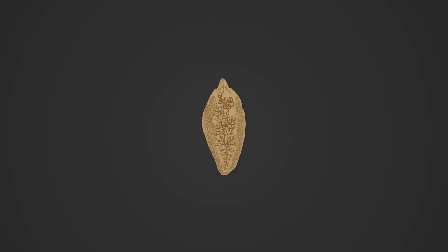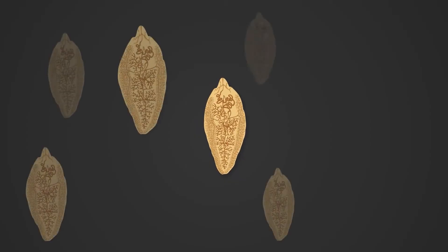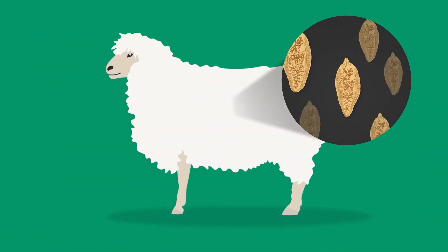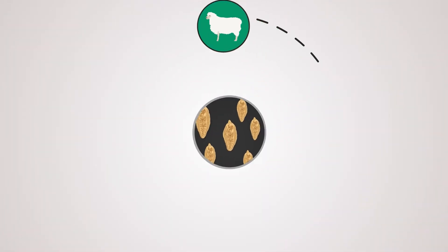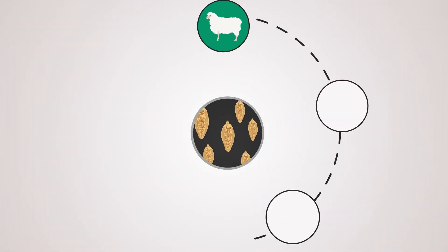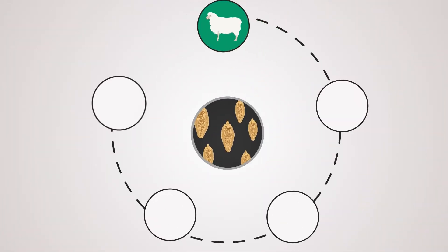Liver fluke is a parasite that affects grazing livestock. Understanding how to successfully control liver fluke in your sheep requires knowledge of the liver fluke life cycle.